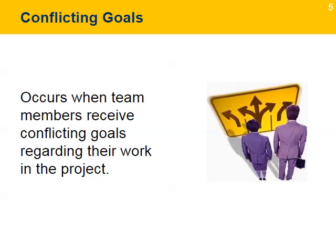Conflicting goals generally occur when an individual or group is given a goal by one person, such as a project manager, that conflicts with the goal given by another person, such as a finance manager. For example, the project manager might tell an employee to get the work done as fast as possible, while another manager might tell that same employee to do the work without exceeding the budget, regardless of time. Project leaders can help prevent these conflicts by ensuring that anyone with the authority to set a goal knows that it may not conflict with other goals.